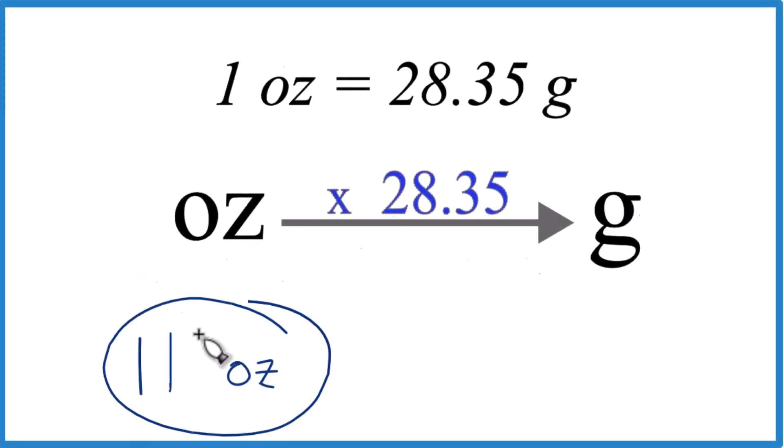All right, so we have 11 ounces here. We want to convert that to grams. How do we do it?